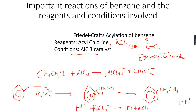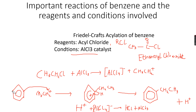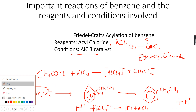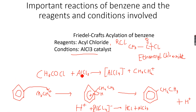This reaction is very similar — what we want to do is attach the acyl group to our benzene ring. Taking ethanoyl chloride as an example, we use the same equation, replacing this with an O. We get AlCl4 negative complex again, because it breaks this bond to give AlCl4 negative.